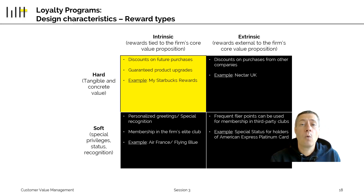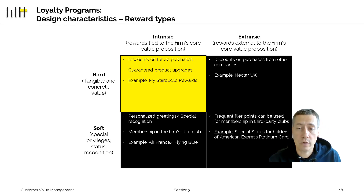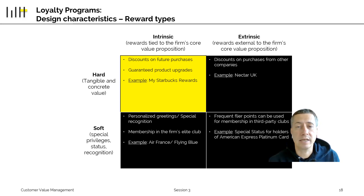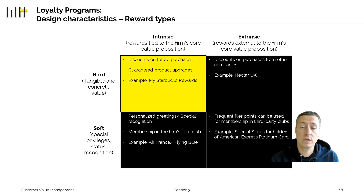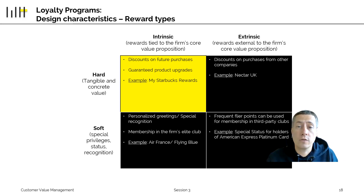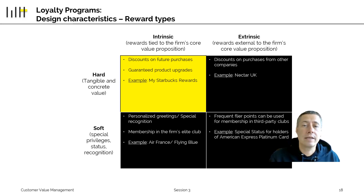Extrinsic hard rewards are benefits outside the scope of the company itself — discounts on purchases from other firms. Many countries have large loyalty programs that combine many firms: you get points at supermarkets, gas stations, and bakeries, and once you accumulate enough points you can redeem them at any outlet in the program. Extrinsic soft rewards work differently: for example, status in one loyalty program can be transferred to another, such as having a high-level American Express card automatically granting special status in a large hotel loyalty program.